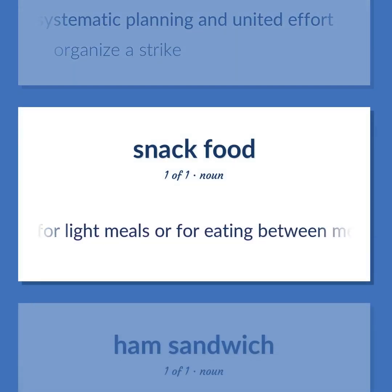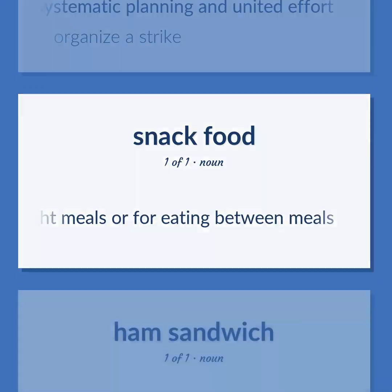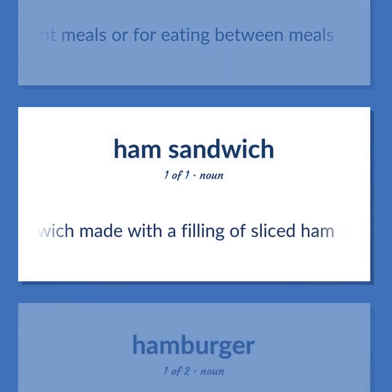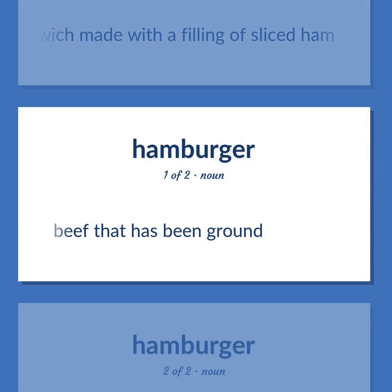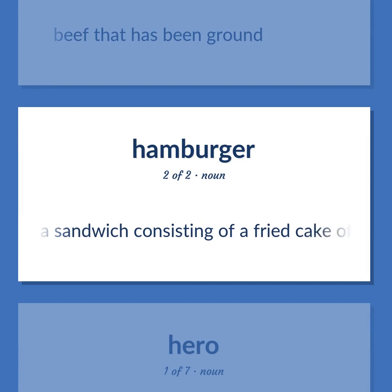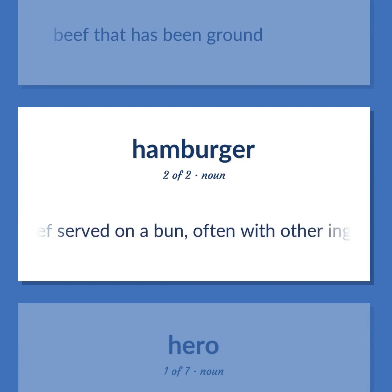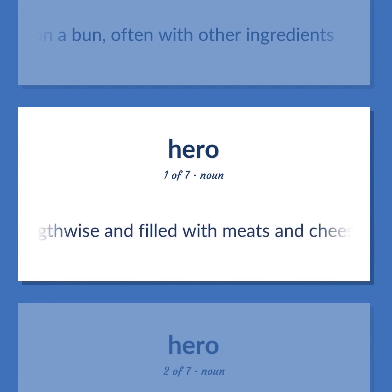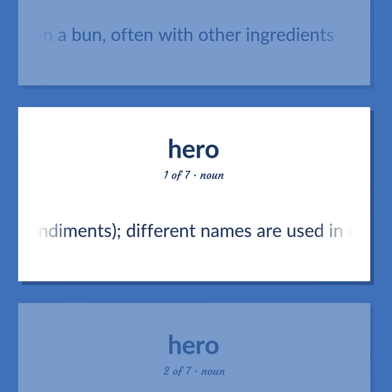Snack food: food for light meals or for eating between meals. Ham sandwich: a sandwich made with a filling of sliced ham. Hamburger: beef that has been ground. Also: a sandwich consisting of a fried cake of minced beef served on a bun, often with other ingredients. Hoagie: a large sandwich made of a long crusty roll split lengthwise and filled with meats and cheese, and tomato, onion, lettuce, and condiments. Different names are used in different sections of the United States.